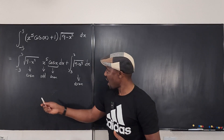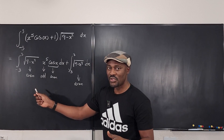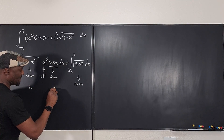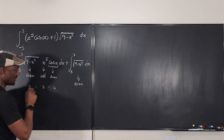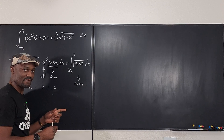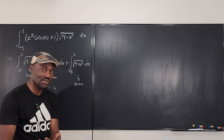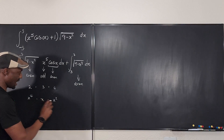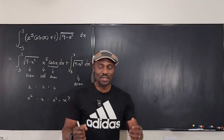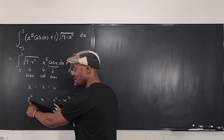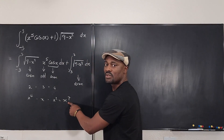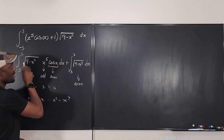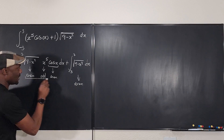When it comes to functions, the product of two even functions multiplied by an odd function becomes odd. For example, if you take x squared and x to the fourth — both even — and multiply by x, you get x to the seventh, which is odd. So the product of two even functions is still even, but once you multiply by an odd function it becomes odd. The product of two odd functions is even. That means this entire integrand — √(9 − x²) times x⁵ times cos x — is an odd function.